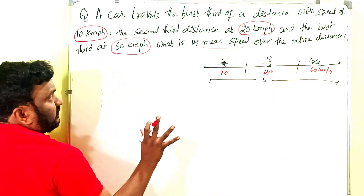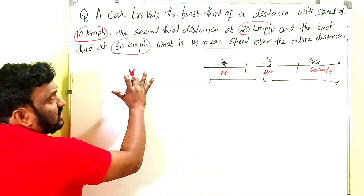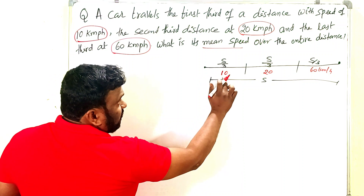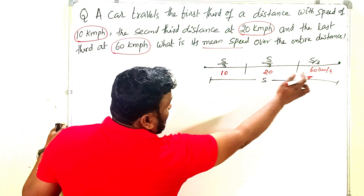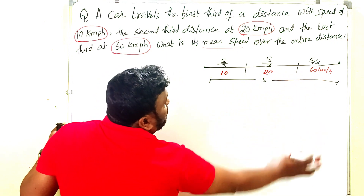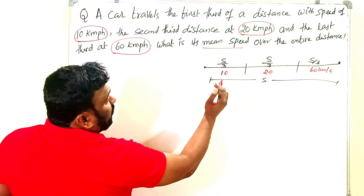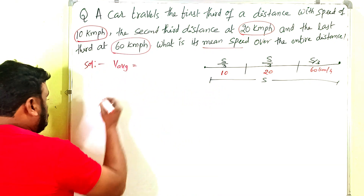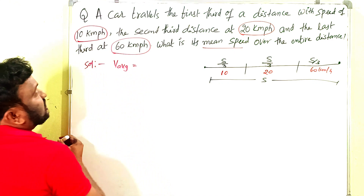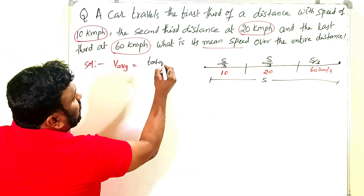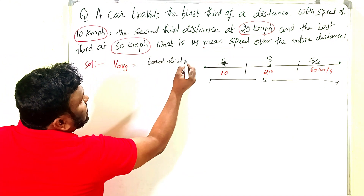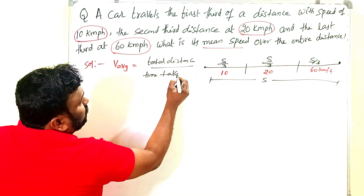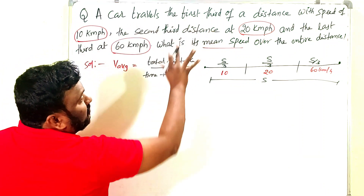According to the given data, the car travels the first third distance with 10 kilometers per hour, the second third at 20 kilometers per hour, and the third part at 60 kilometers per hour. We have to find out the average speed. We know that speed equals total distance divided by time taken.